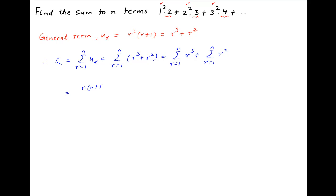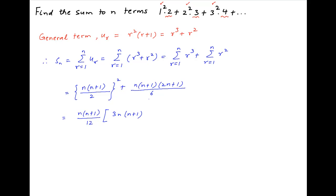Now plugging in the values of summation r³ and summation r², we get S_n equal to [n(n+1)/2]² plus n(n+1)(2n+1)/6. Taking n(n+1)/12 as common, we get n(n+1)/12 multiplied by [3n(n+1) + 2(2n+1)], which equals n(n+1)(3n²+7n+2)/12.